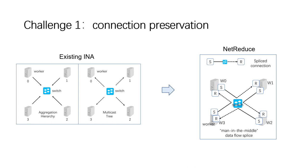To achieve this goal, the first challenge we face is connection preservation. Existing solutions view gradient aggregation and result multicast as two separate processes. In each process, the data flow is mutated, breaking the classic end-to-end principle. But if we put the two processes together, we can splice the data flows to form end-to-end connections. For example, we can splice the gradient data flow W0 to the switch with the result flow from switch to W1. The whole data flow W0 to W1 would therefore experience man-in-the-middle data manipulation but keep the volume unchanged, so the two endpoints do not perceive the data mutation, keeping connection states functioning correctly.